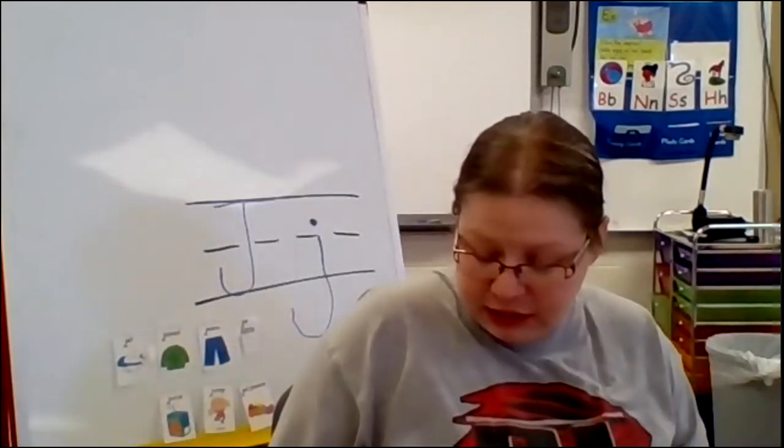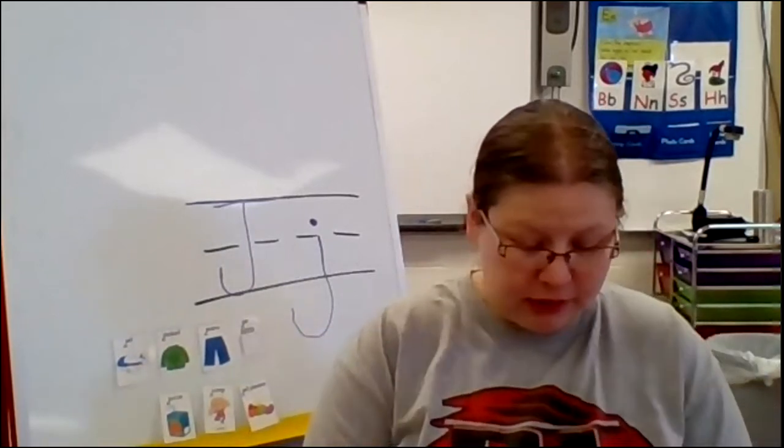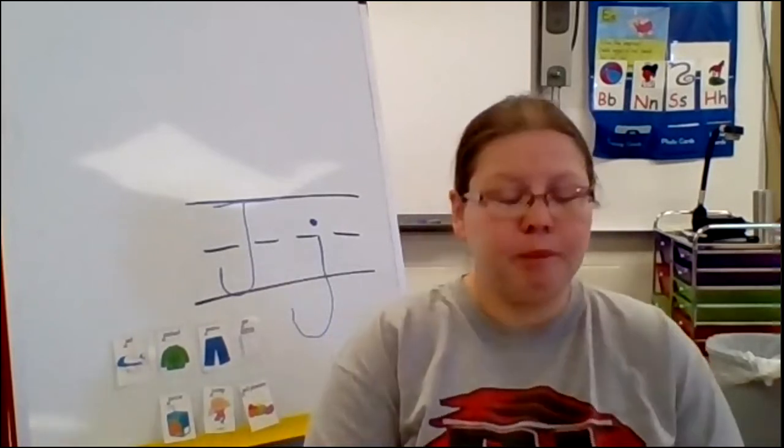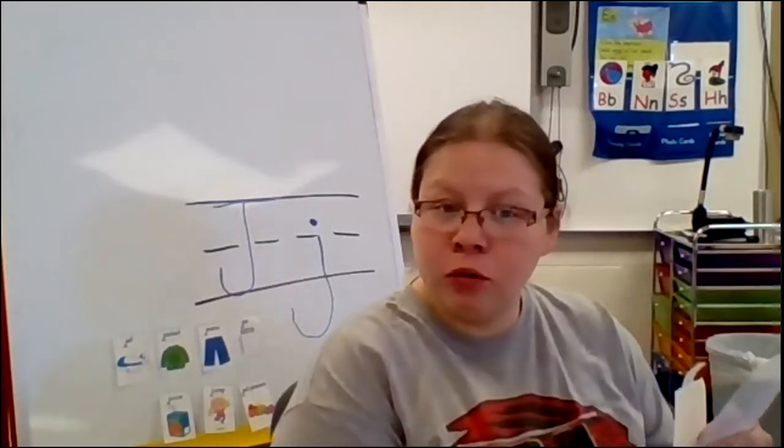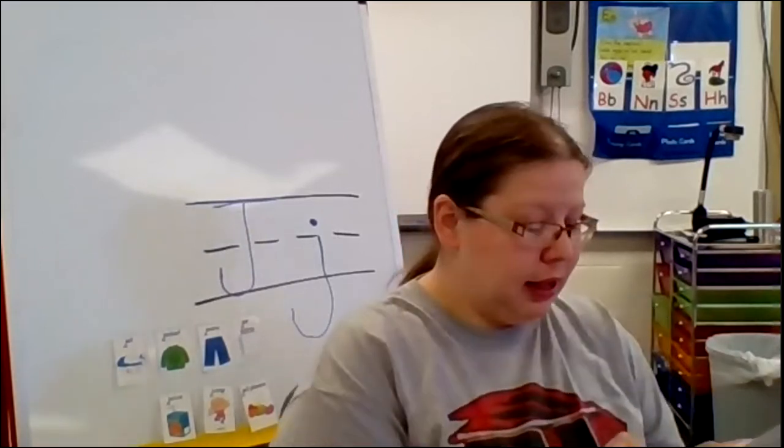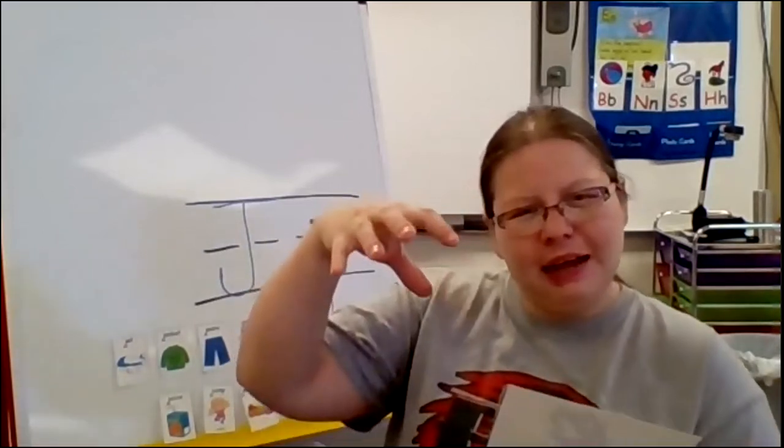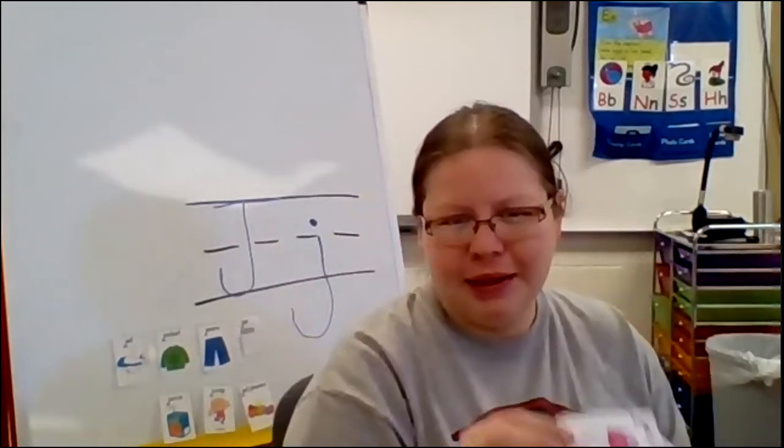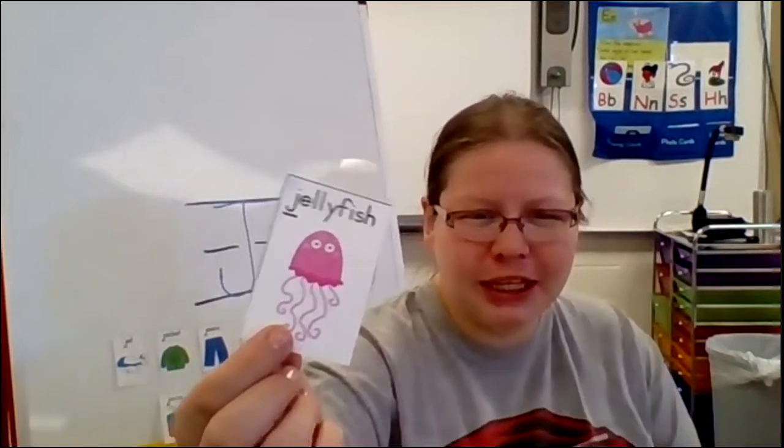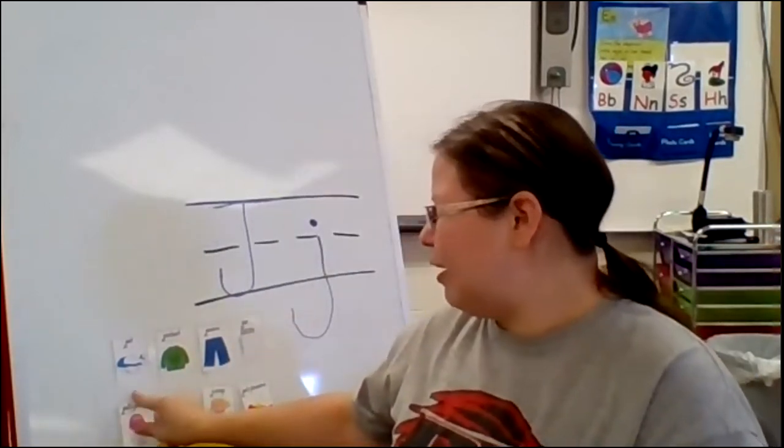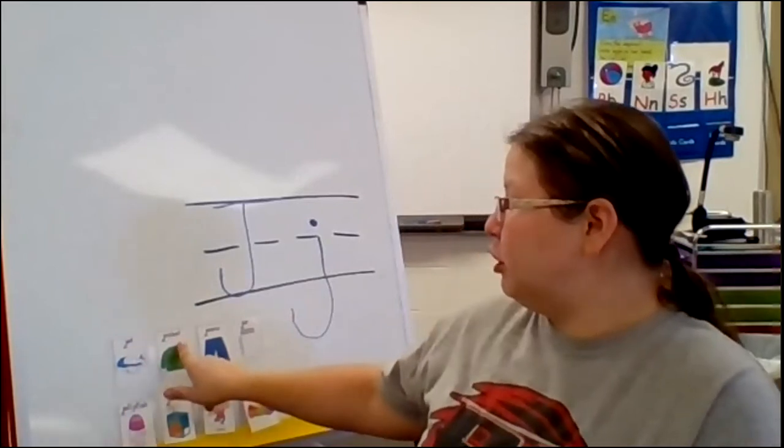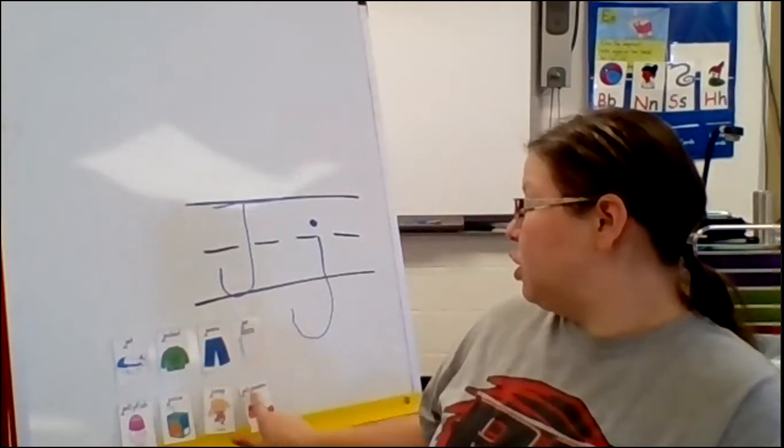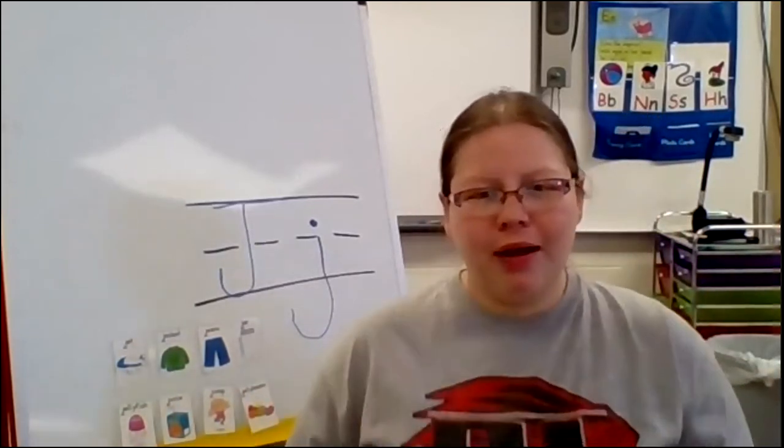Alright, I got one more secret word for you. Let's see if you can guess this one. Begins with Juh. It lives in the ocean. And SpongeBob and Patrick really like to go fishing for these. It is Juh, Juh, Jellyfish. So on our wall, we have jet, jacket, jeans, jar, jellyfish, juice, jump, and jelly beans.